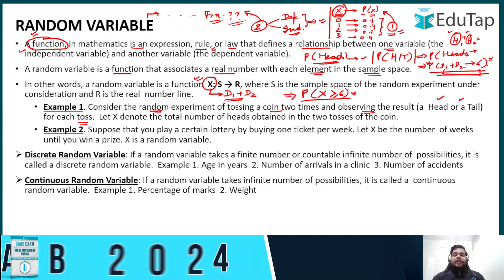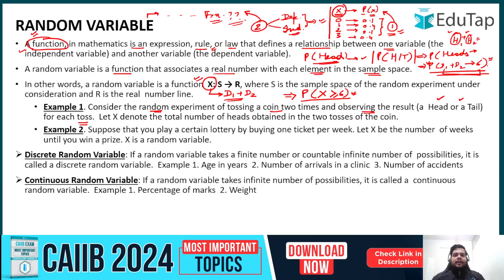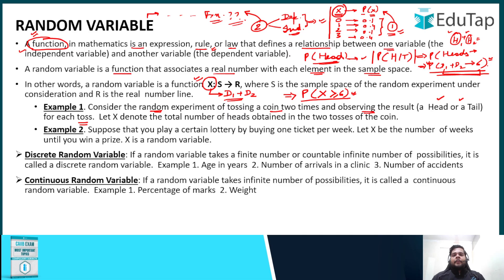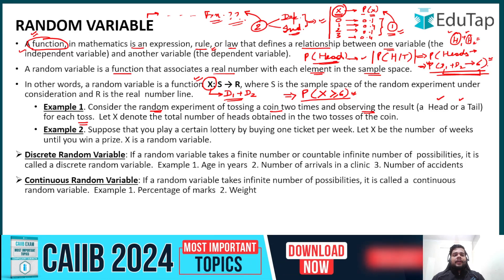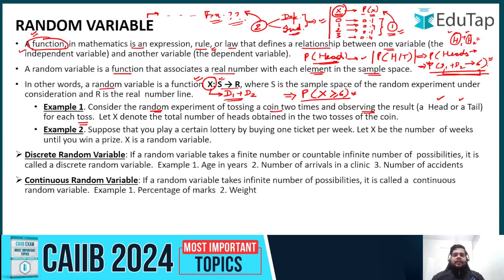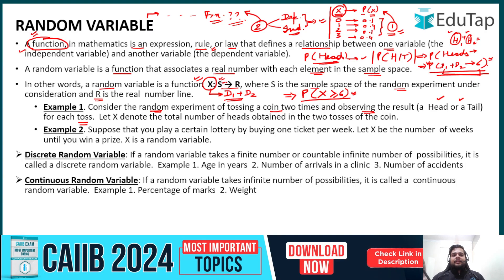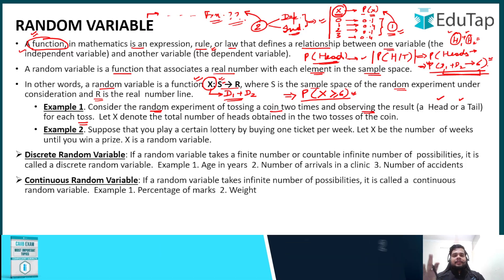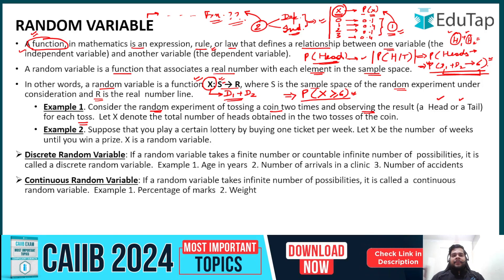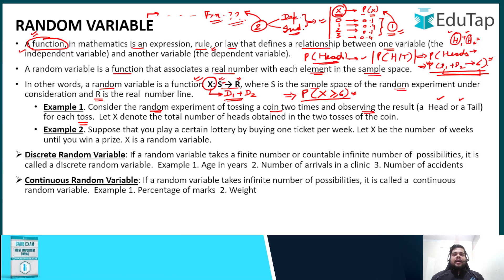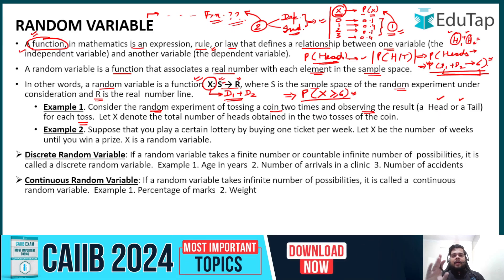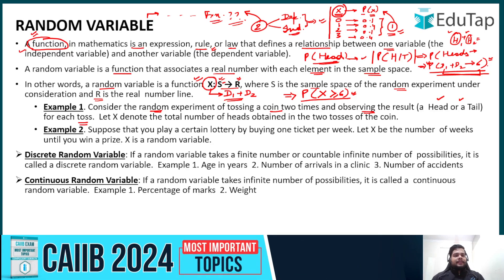In other words, a random variable is a function X: S → R, where S is the sample space of a random experiment and R is the real number line. In the dice example, the sample space has 36 outcomes, and we define R as the condition that the summation of both dice outcomes should be greater than or equal to 6.